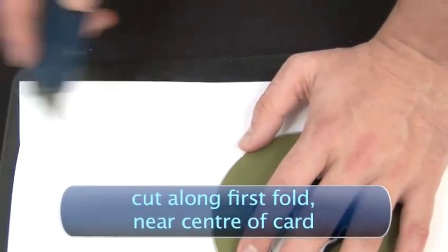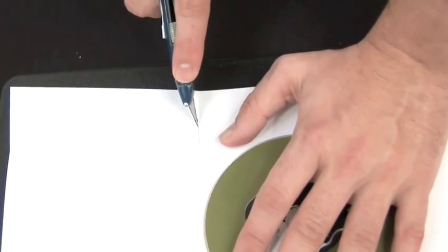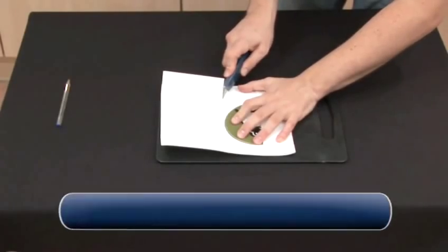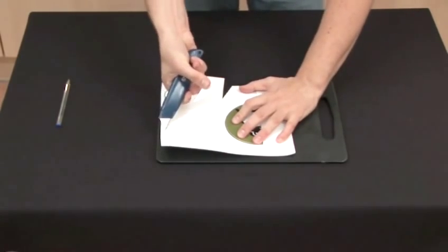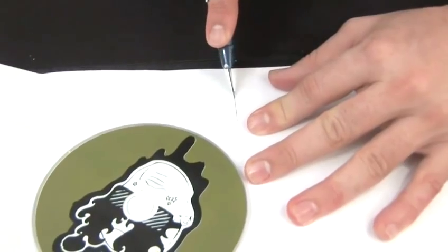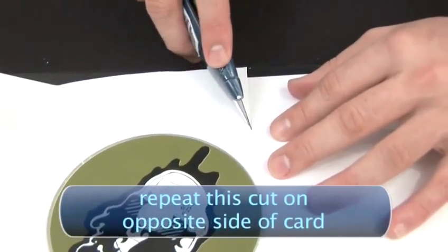Cut along the first fold you made near the centre of the card, stopping as you reach the fold that bisects it. Make another cut at about 45 degrees below this, removing a triangle. This angle needn't be too accurate. Repeat this on the opposite side.